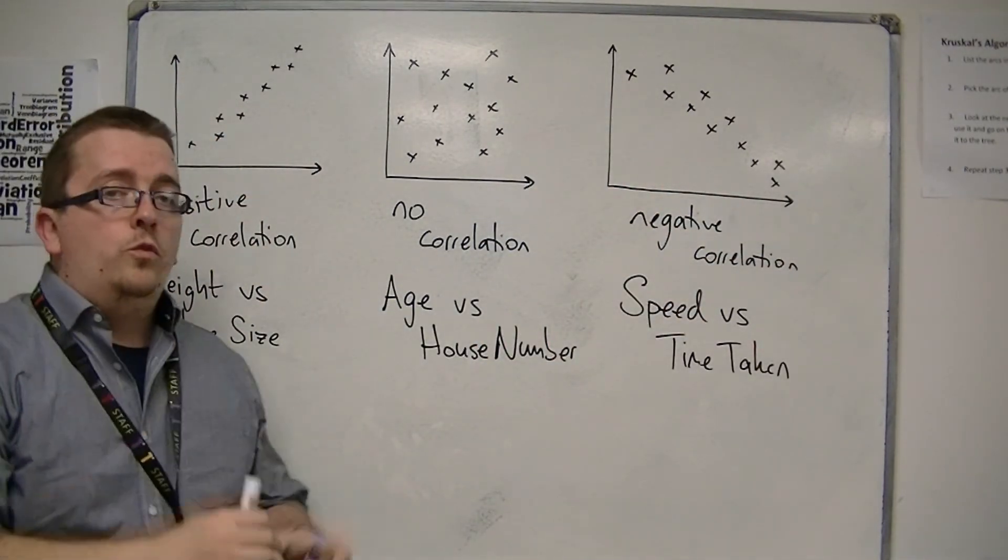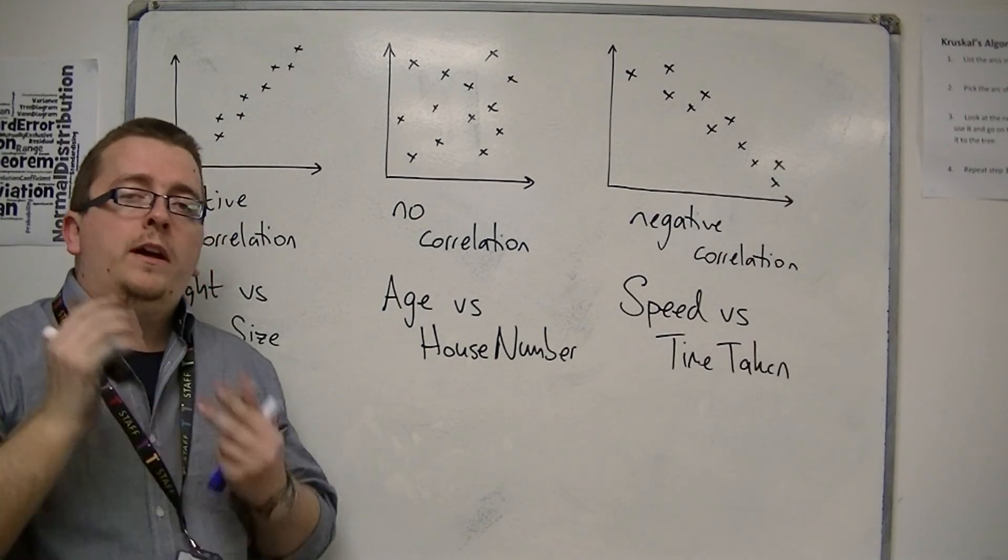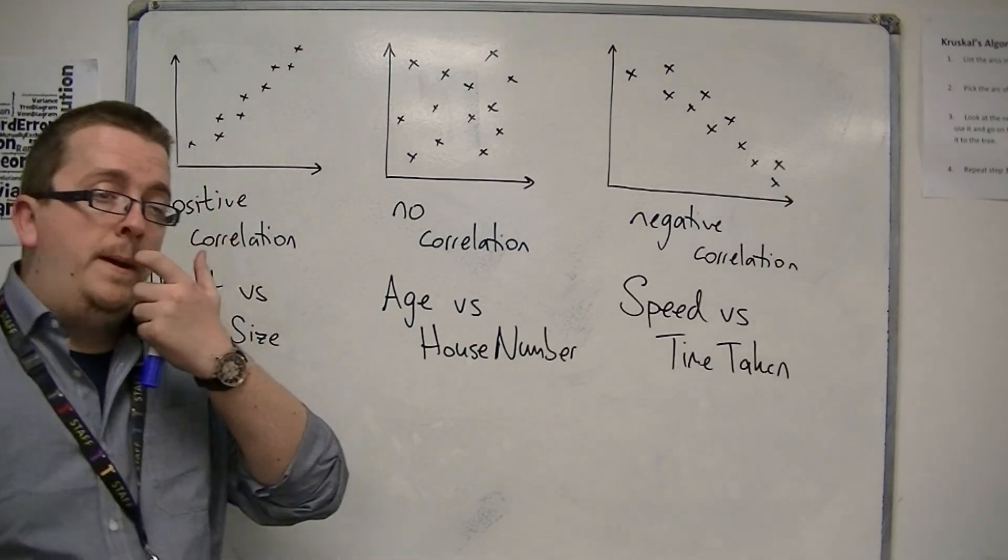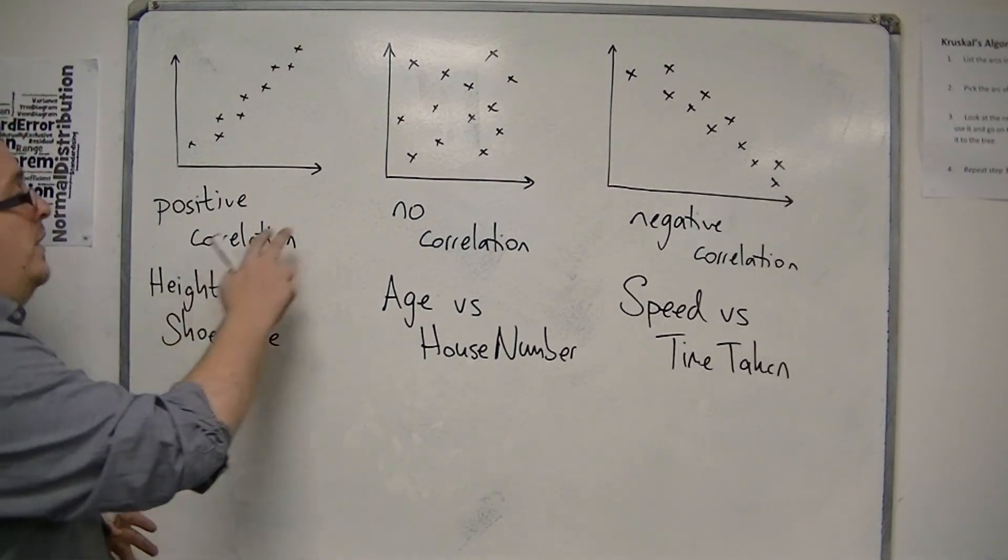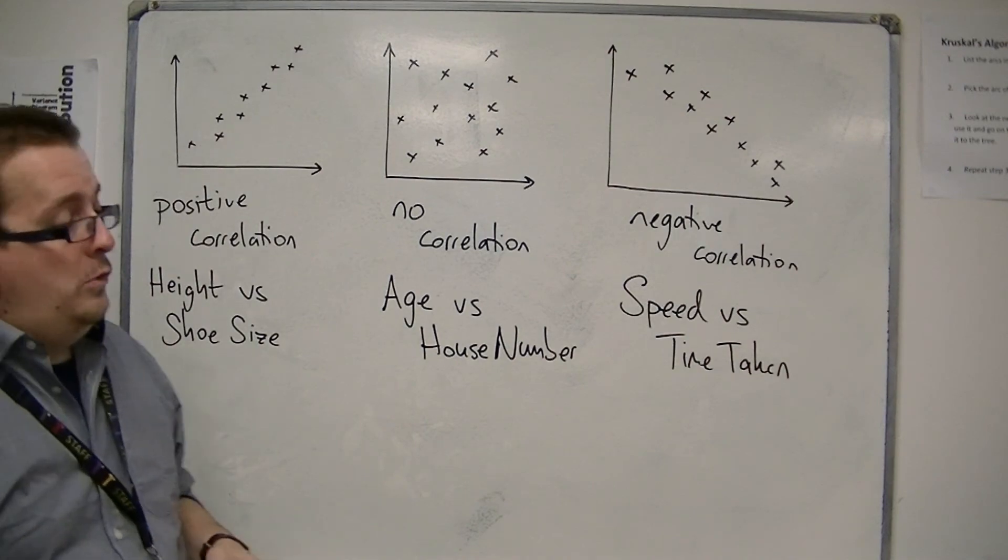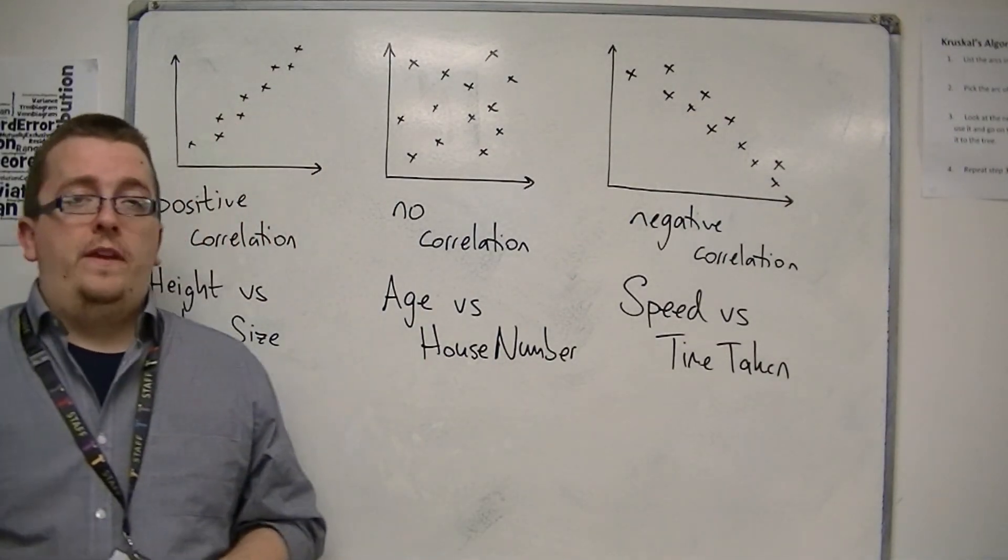This is how we can describe a graph's correlation. And if you're asked to describe a correlation, then it will either be positive, negative, or no correlation. That is how we can work with this.